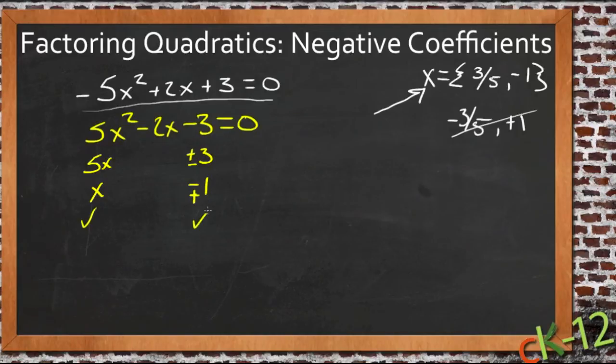We have our first check, our second check, and our third check then would be to multiply diagonally. So we'd have 5x times negative 1 would be negative 5x. And x times positive 3 would be positive 3x. Looks like we hit it on our first shot there. Negative 5 plus 3 is negative 2. So yeah.